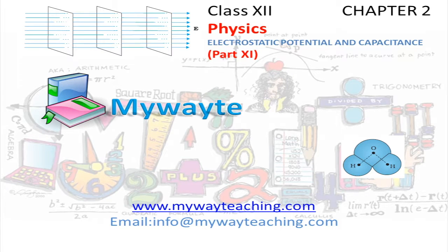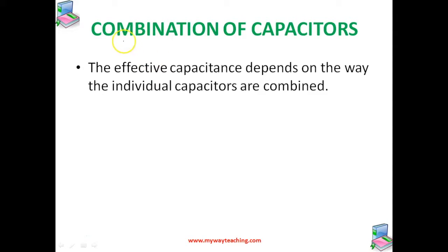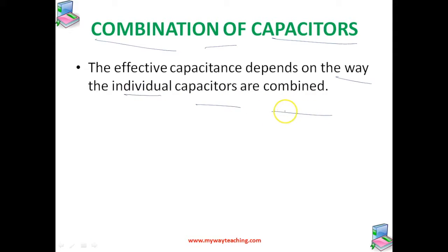This video is brought to you by MyWayTeaching.com. Now let us study combination of capacitors. We can combine several capacitors C1, C2, up to Cn into a system with some effective capacitance. The effective capacitance depends on the way the individual capacitors are combined. When we arrange capacitors, we get them in two forms.